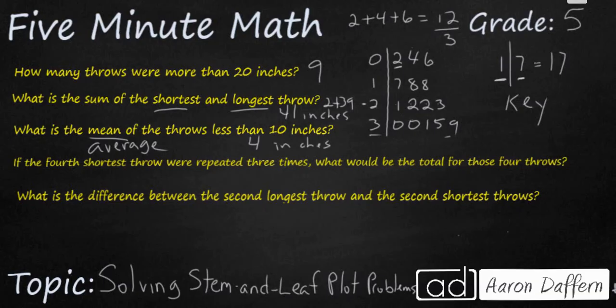If the fourth shortest throw were repeated three times, what would be the total for those four throws? The fourth shortest throw, you start from our shortest throw, two inches. We count out 1, 2, 3, 4. So here's our fourth shortest throw and that's 17.